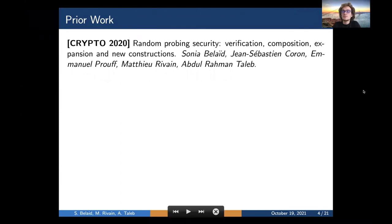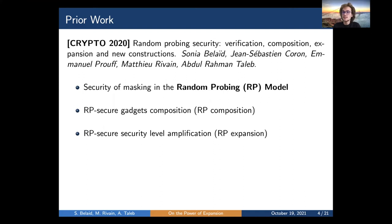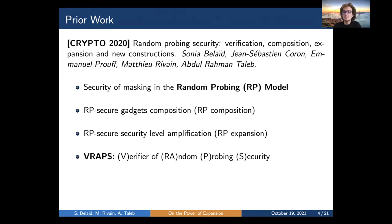This work is a follow-up to a prior Crypto 2020 work, where the authors explicitly define random probing security and introduce the notion of random probing composition to generate large circuits with overall security. Their essential contribution is the expansion strategy, which aims to arbitrarily amplify the security level of any RP-secure circuit. They also implement a verification tool called BRAPS to verify these properties for small gadgets in reasonable time.